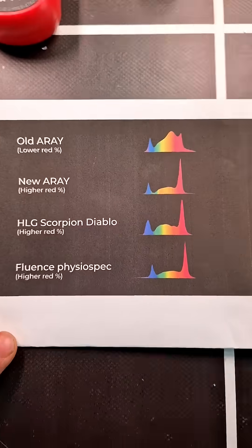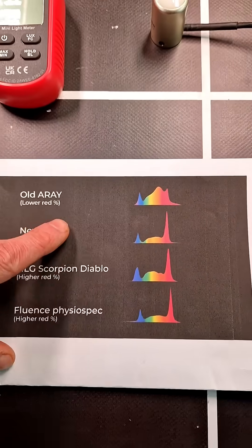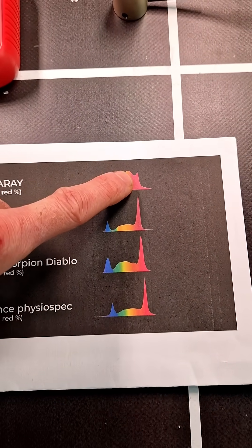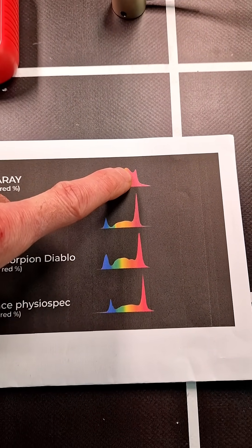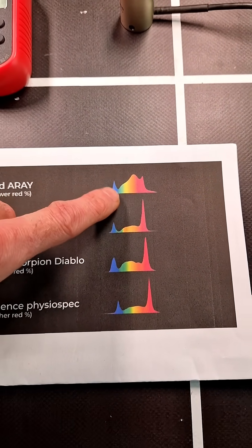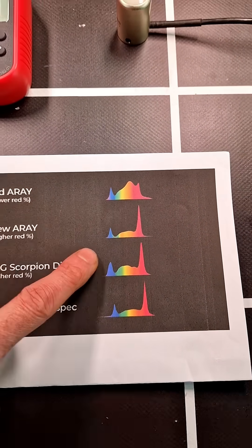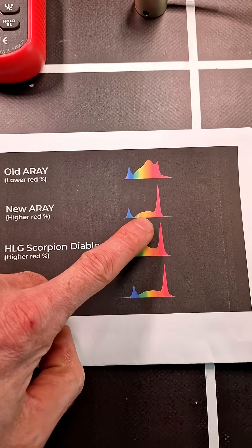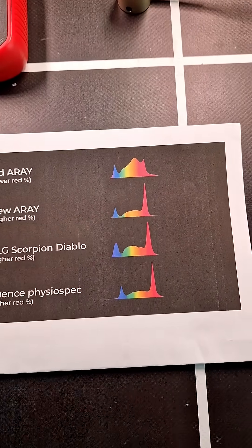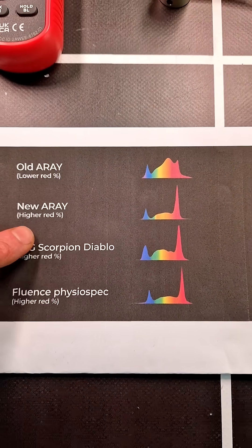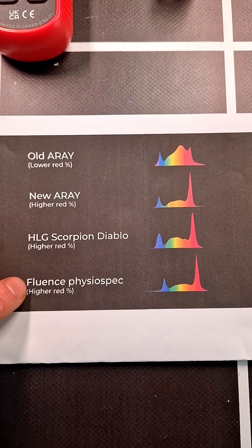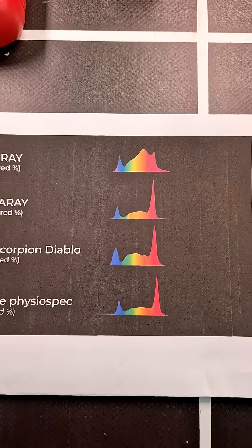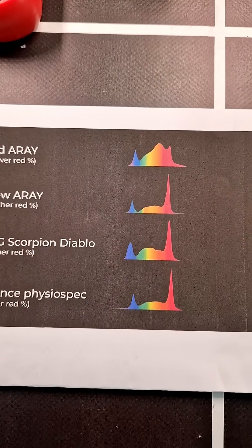The reason is this: the old array had a relatively small amount of 660 nanometer red, making it slightly less efficient. The new array has a higher proportion of 660 nanometer red, which you can see is common amongst high efficiency fixtures.